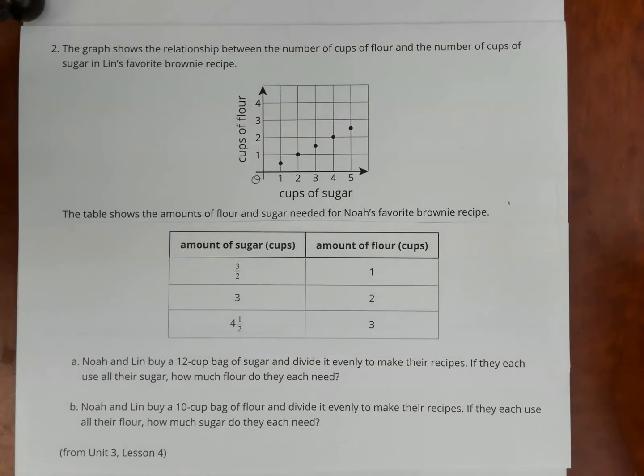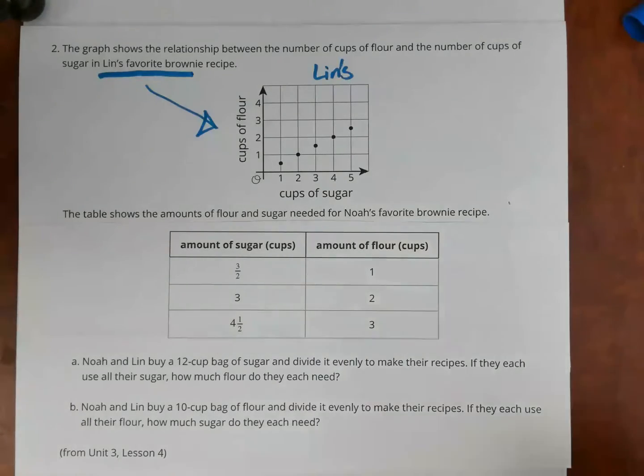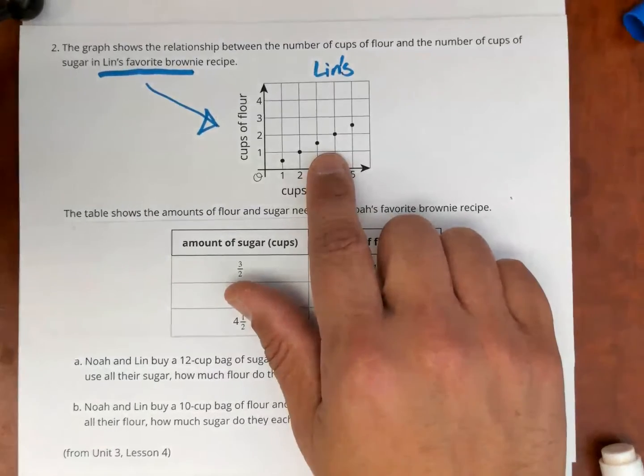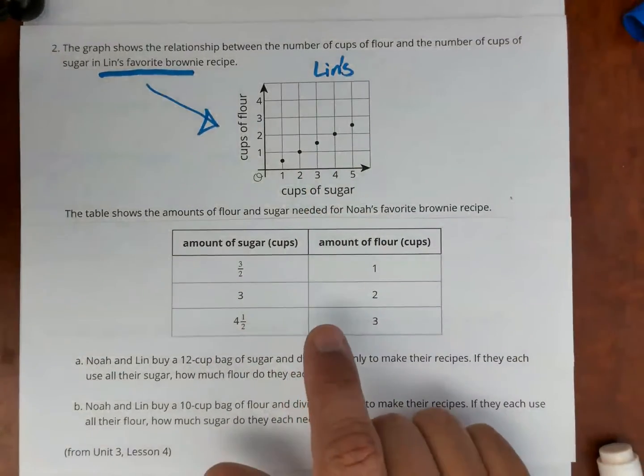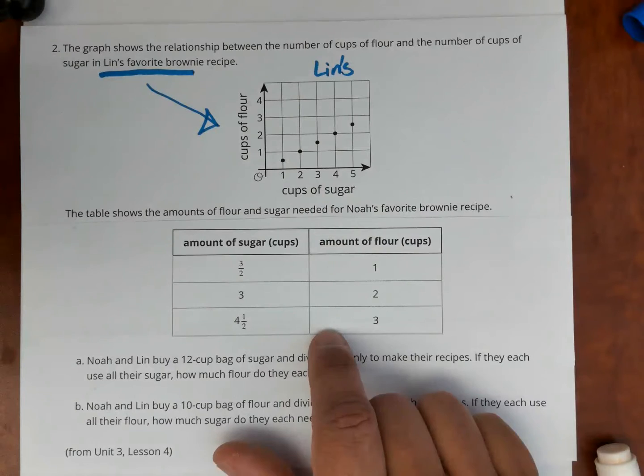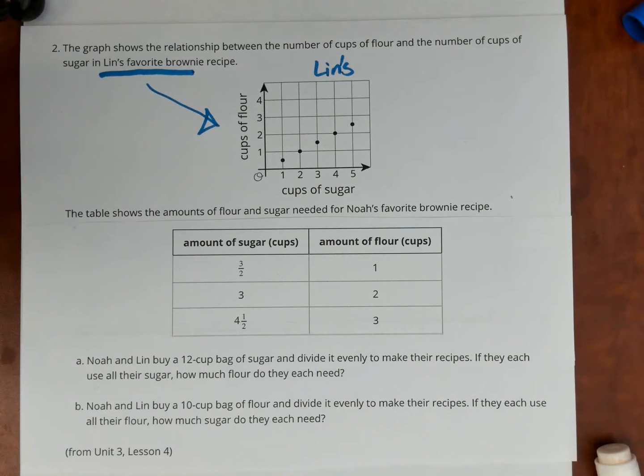The graph shows a relationship between the number of cups of flour and the number of cups of sugar in Lynn's favorite brownie recipe. The table shows the amount of flour and sugar needed for Noah's favorite brownie recipe. So right now I want you to notice here we have two different recipes. One is Noah's and one is Lynn's. So Lynn's recipe is this graph here, then Noah's recipe is shown in the table. These are two different recipes.